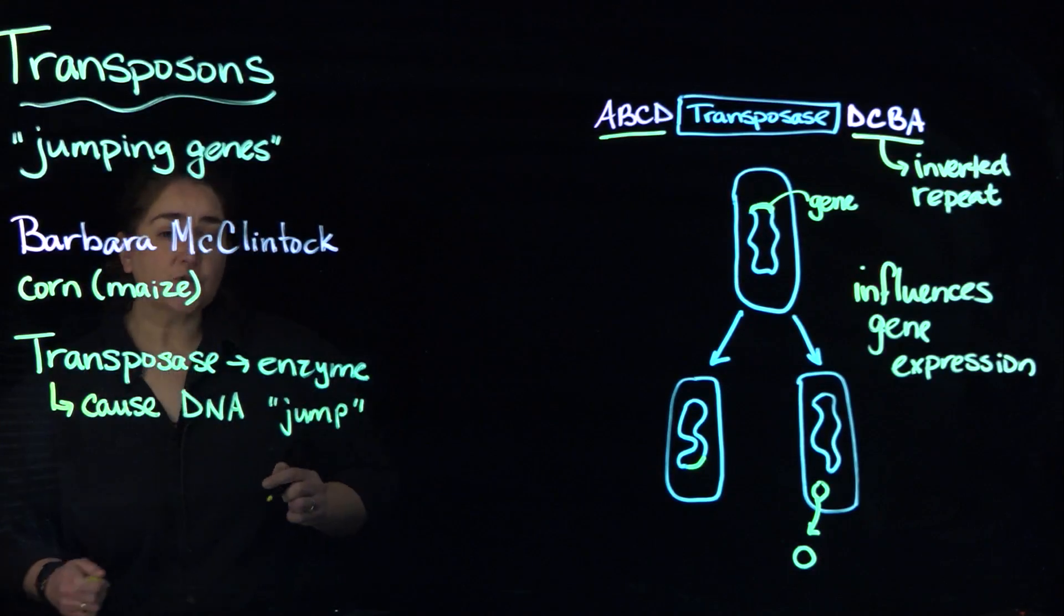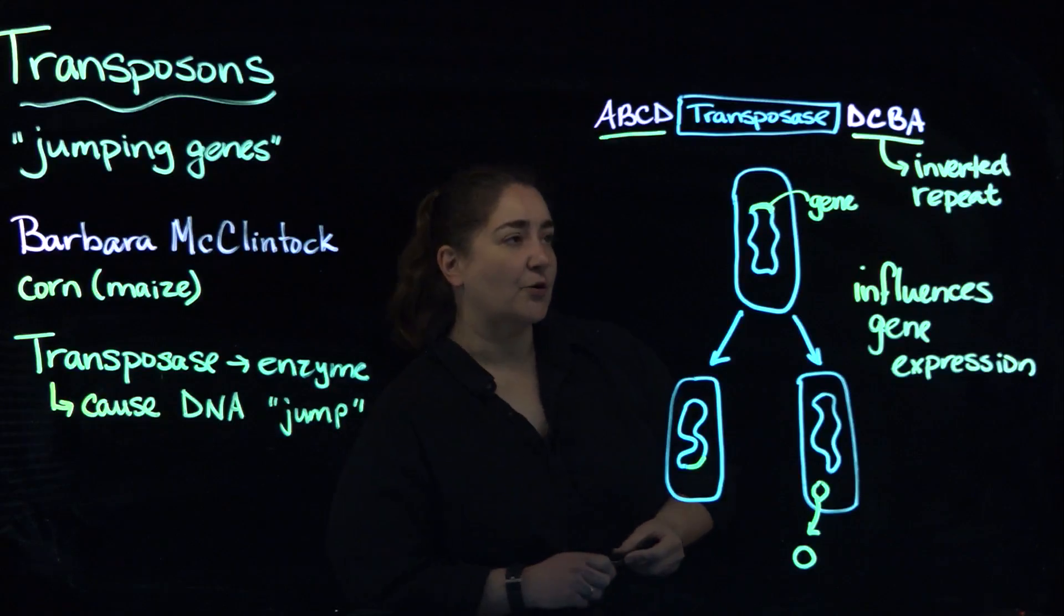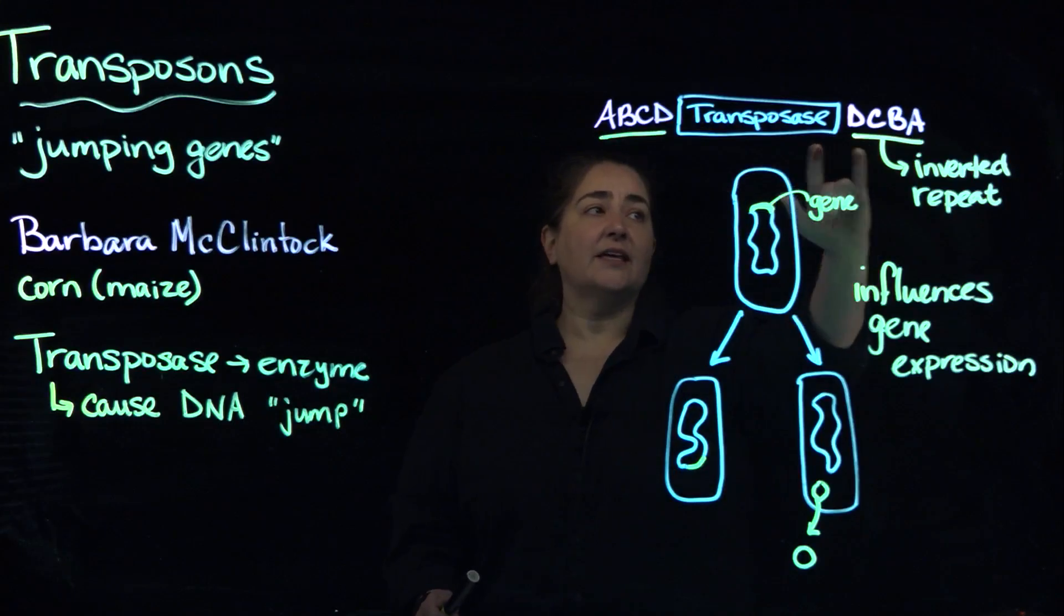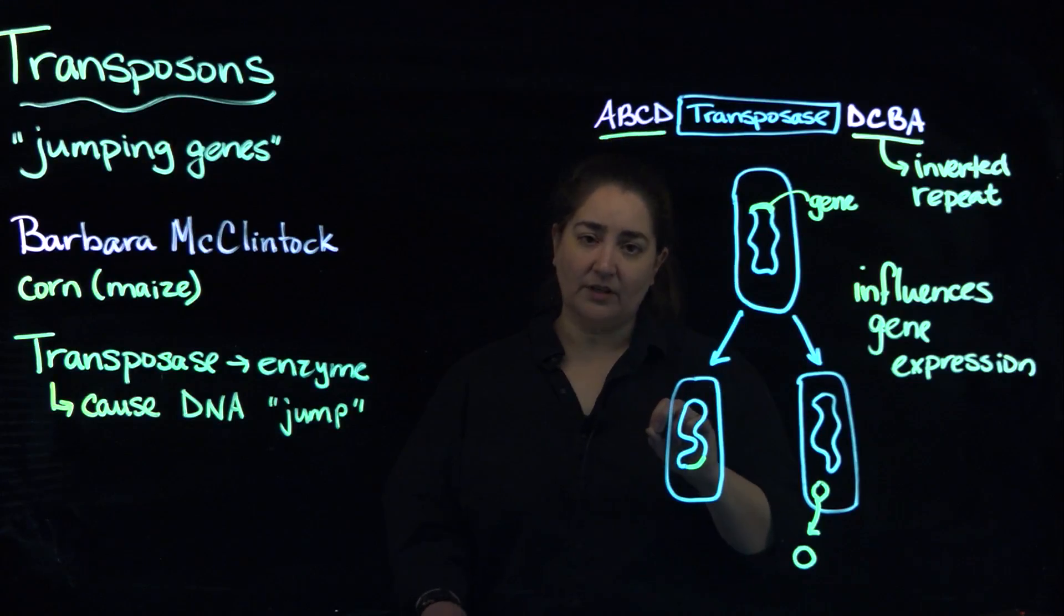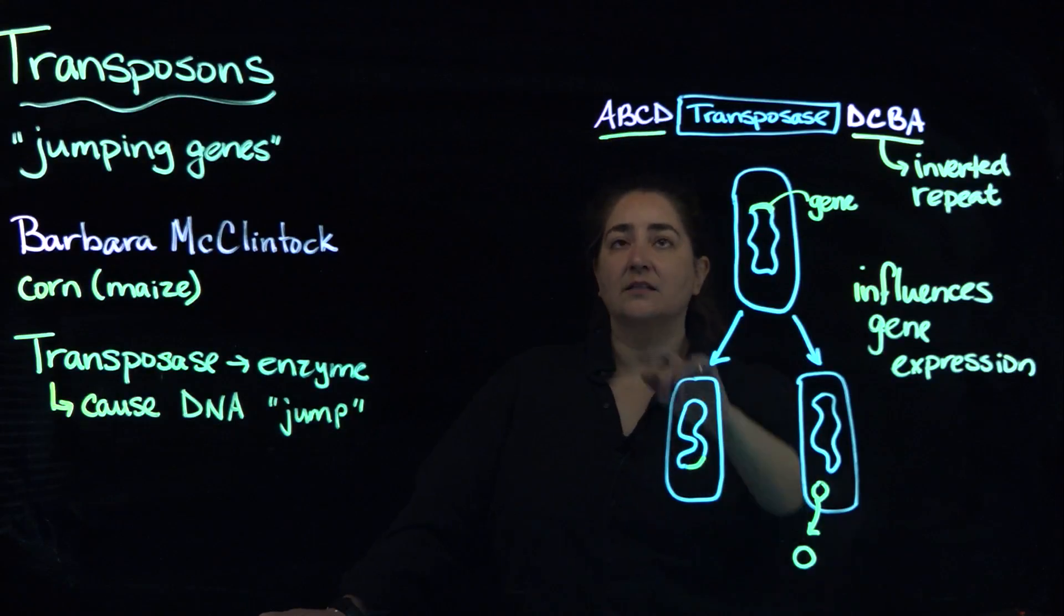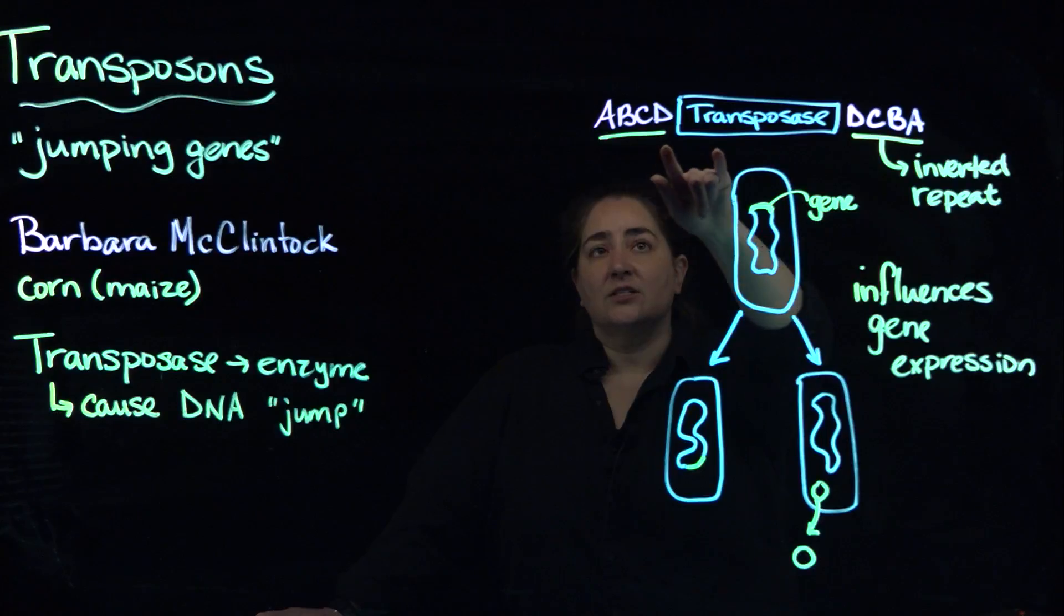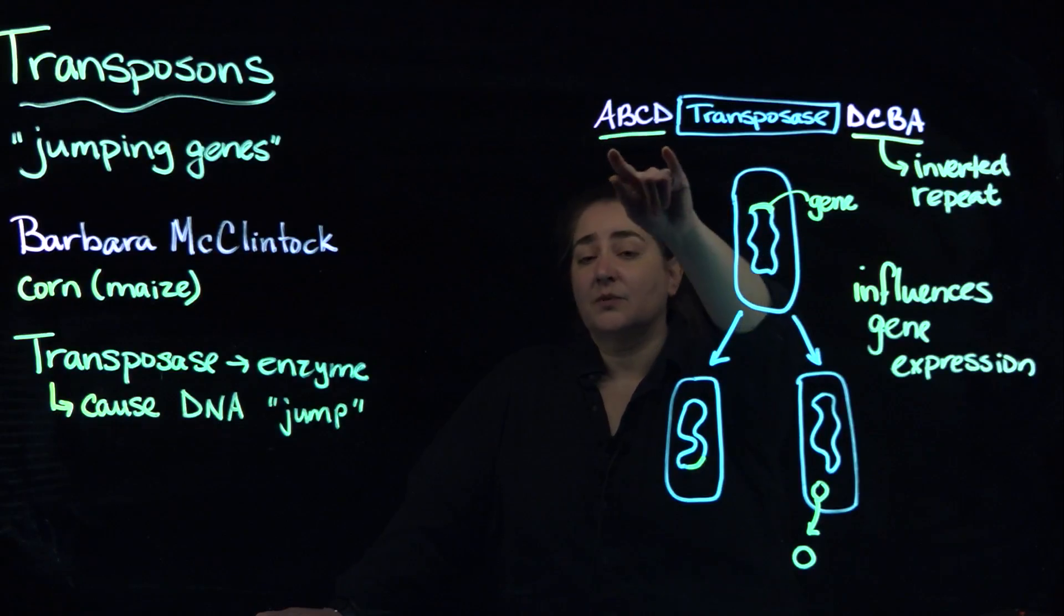So those transposable elements or that transposase is flanked by inverted repeats. And we haven't talked about what an inverted repeat is yet, but essentially it's a DNA sequence that has a particular order. In this case, I just used the alphabet.